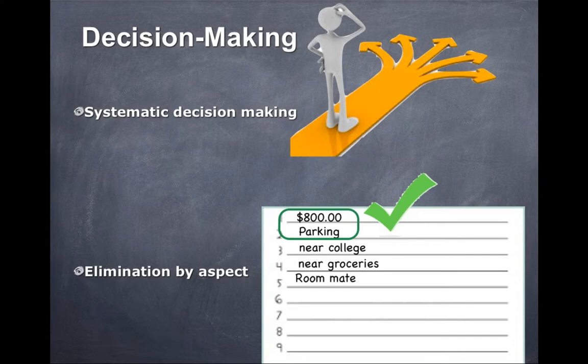Elimination by aspect is a decision-making approach where alternatives are evaluated against criteria. For example, when renting an apartment: it must be no more than $800, have parking, be near the college, and close to a grocery store. You rank those criteria from most important to least important and make choices based on what matters most. That's elimination by aspect.